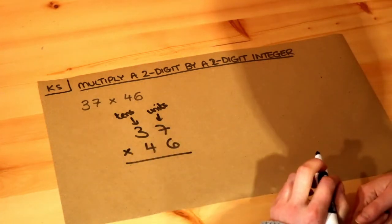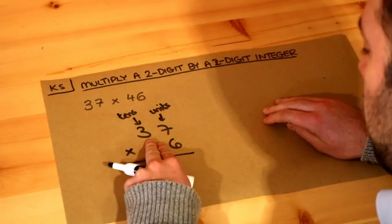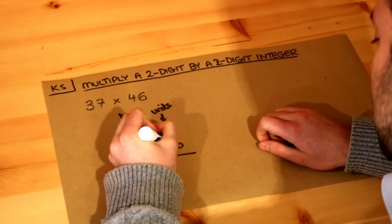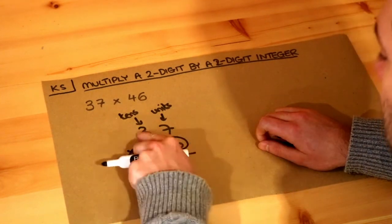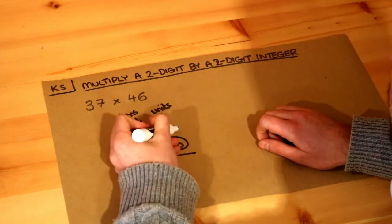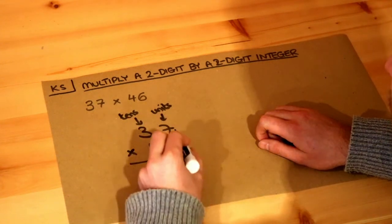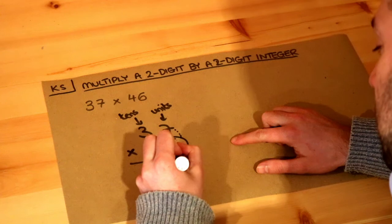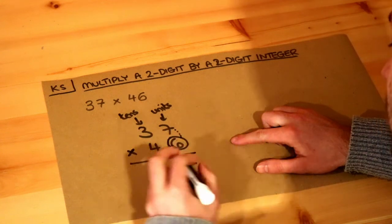As I said, we ignore the 4 and just do 37 times 6. I'm going to circle the 6 so we can concentrate on it. We do 7 times 6, which is 42, so we put the 2 here—the units digit—and carry the 4.